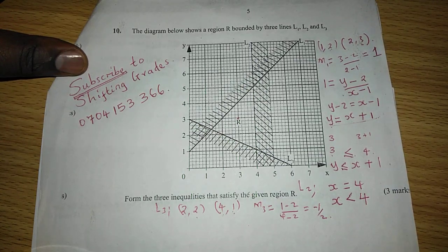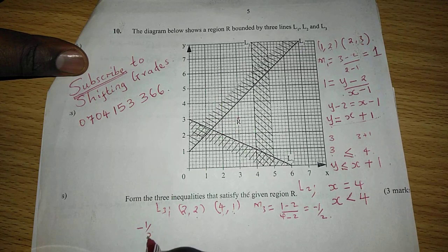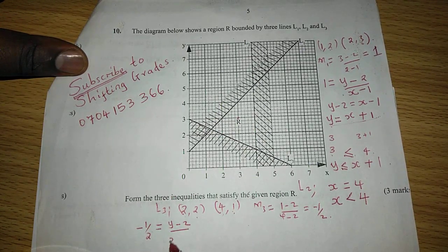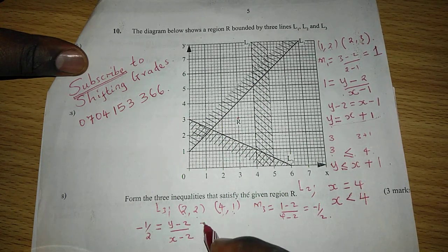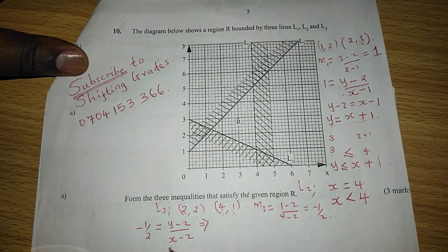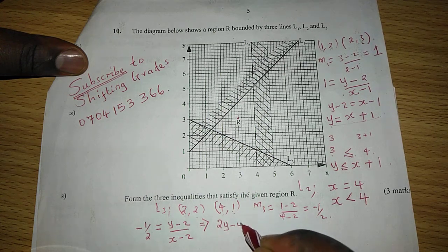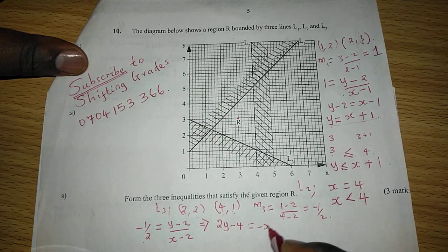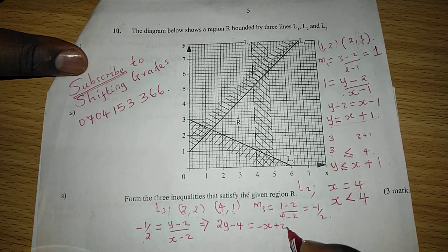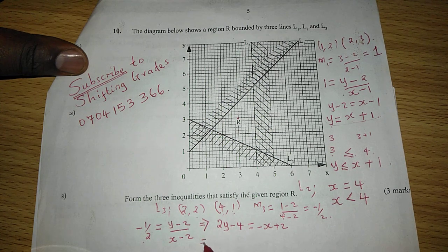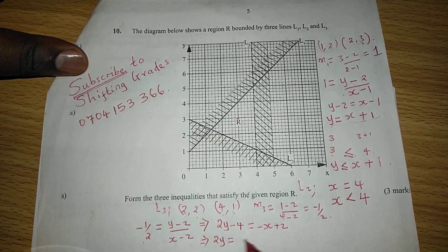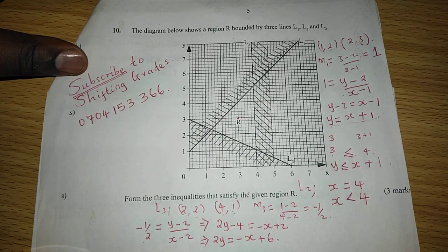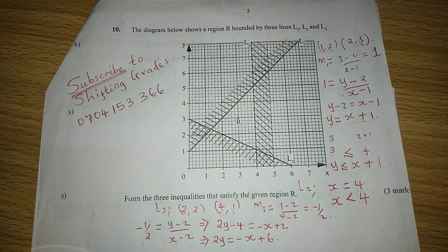So negative half equals to Y minus 2 out of X minus 2, so that we may get the equation. This gives us 2Y minus 4, when we cross multiply, equals to negative X plus 2. And when we rearrange this, then we shall obtain 2Y equals to negative X plus 6. So this is the equation for L3.